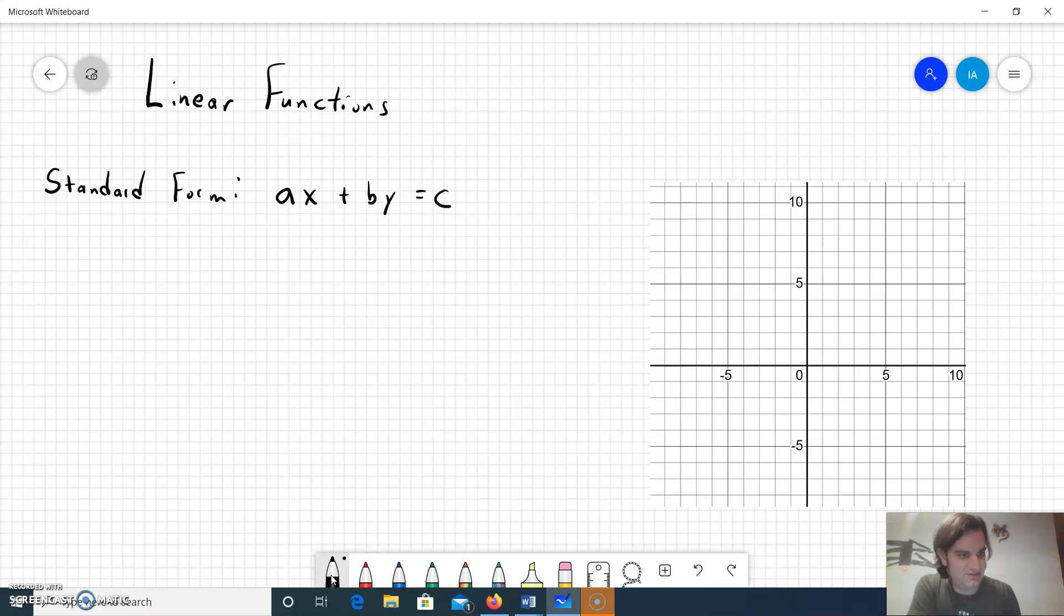What you might be more used to is what's called slope intercept form, which is y equals mx plus b. If you're familiar with this, x and y are the solution points of the graph, but more importantly m is the slope of the function, and you may be familiar with slope as being a rise over run.